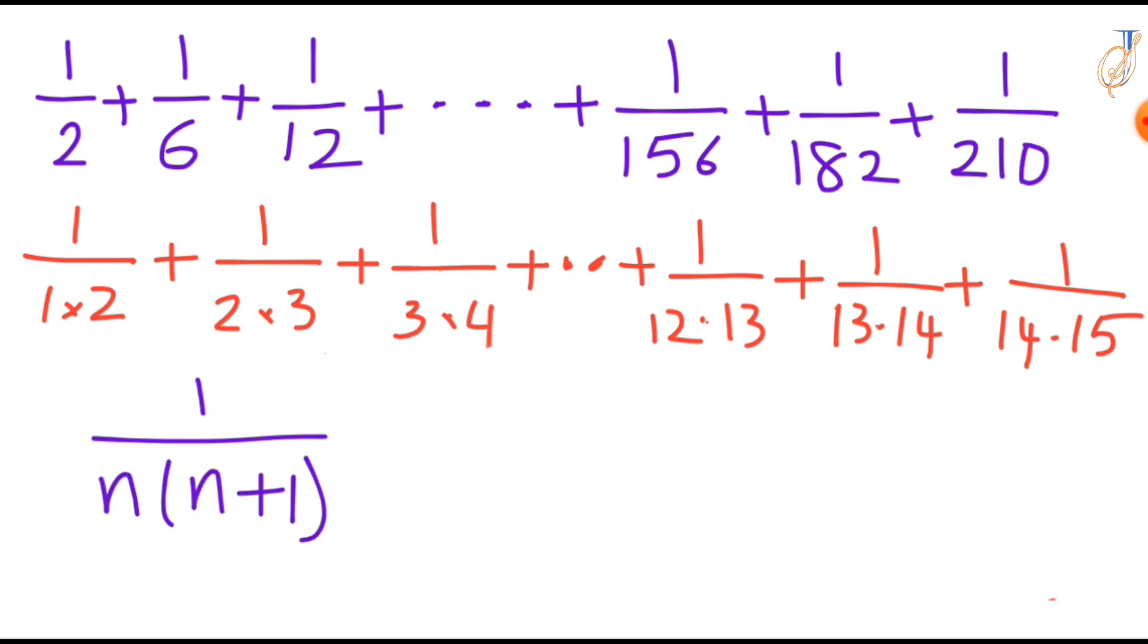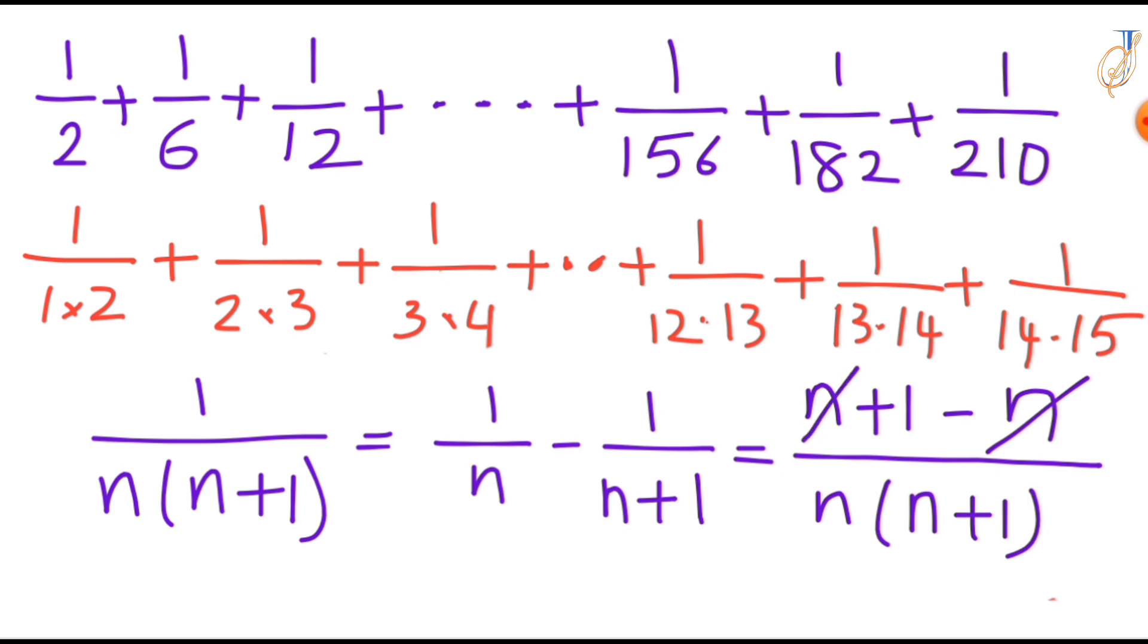So this we can write it as 1 over n minus 1 over n plus 1. So if you do LCM, n times n plus 1 in the numerator will get n plus 1 minus n. So here n and n cancel, you will get same as the previous one.